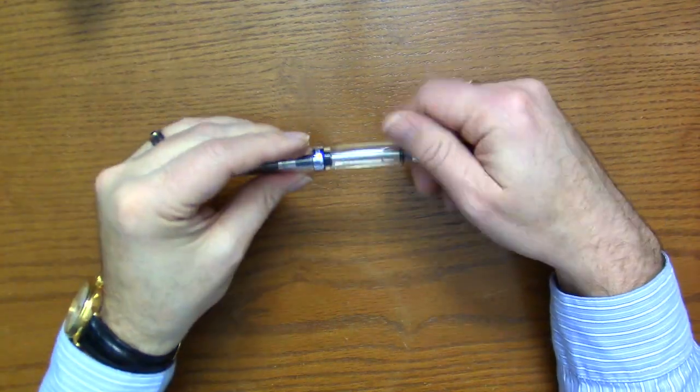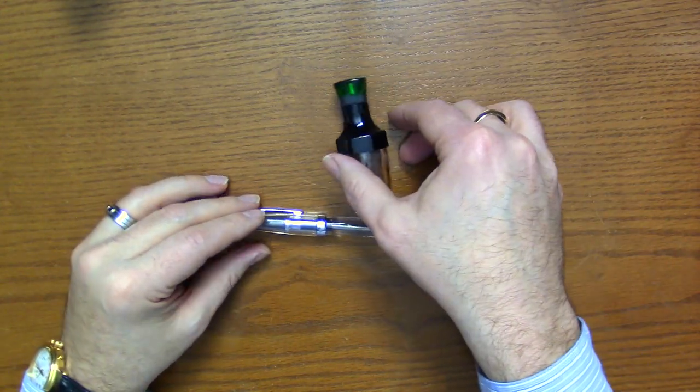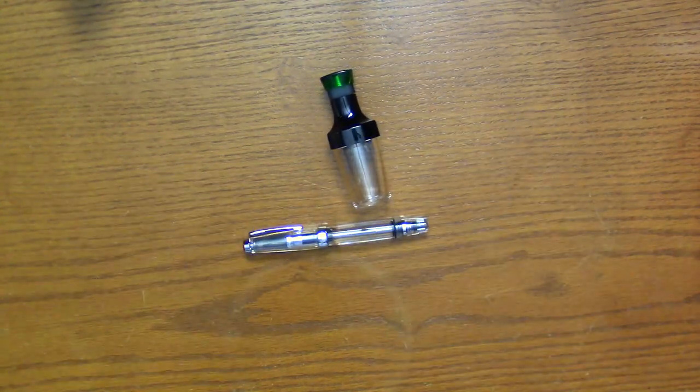So there is the TWSBI VAC Mini and the brand new VAC 20A bottle. So there you have it, the TWSBI VAC Mini and VAC 20A bottle. Be sure to check us out online at andersonpens.com, our store in Appleton, Wisconsin, or any number of pen shows nationwide.